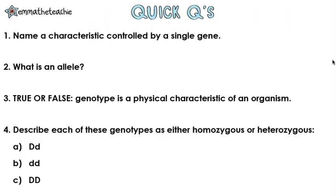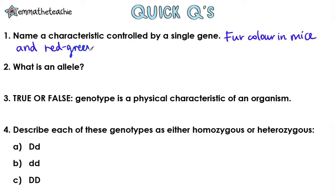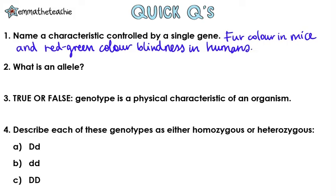That was a lot of information. Give these questions a go, but if you need to, go back and recap any parts. Number one: name a characteristic controlled by a single gene. This could be fur color in mice or red-green color blindness in humans — there are others, but these two are on the spec. Number two: what is an allele? An allele is a different form of a gene.